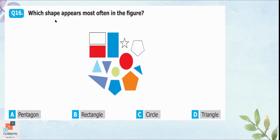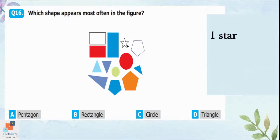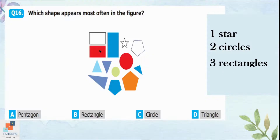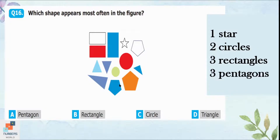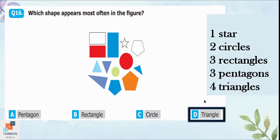Question 16: Which shape appears most often in the figure? We can see one star, two circles, three rectangles, three pentagons, and four triangles. So option D is correct — triangles appear most often in the figure.